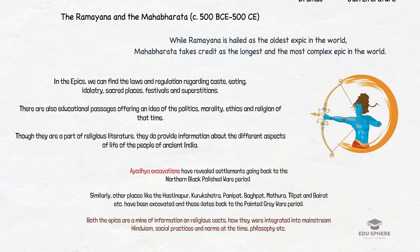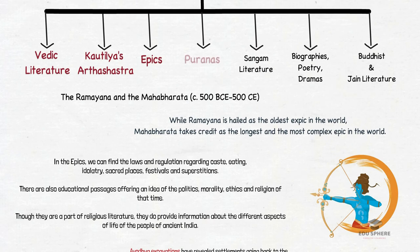In recent times, some of the sites mentioned in both epics have been excavated. For example, the Ayodhya excavations have revealed settlements going back to the Northern Black Polished Ware period. Similarly, other places like Hastinapur, Kurukshetra, Panipat and Mathura have been excavated, dating back to the Painted Grey Ware period. So undoubtedly, both the epics are a mine of information on how the religious sects were integrated into mainstream Hinduism.